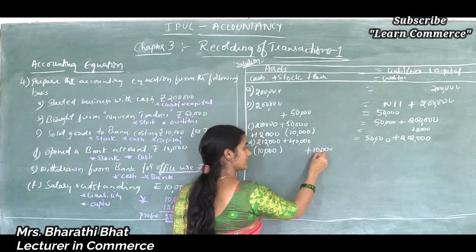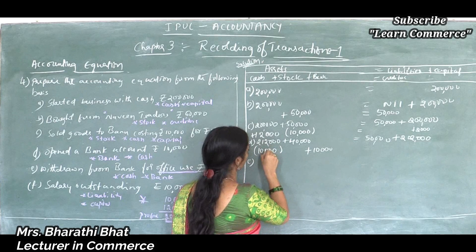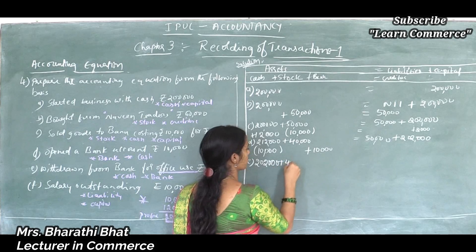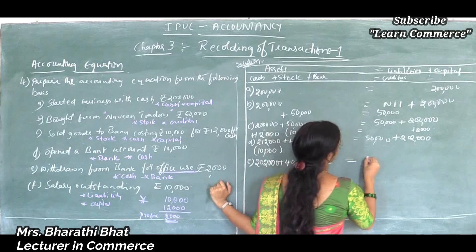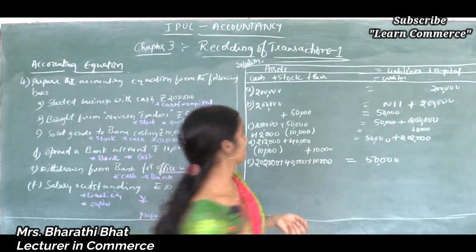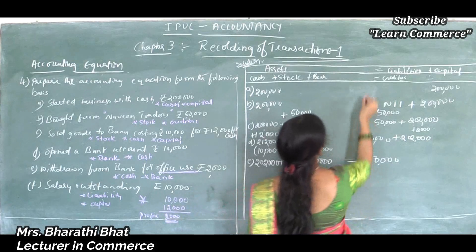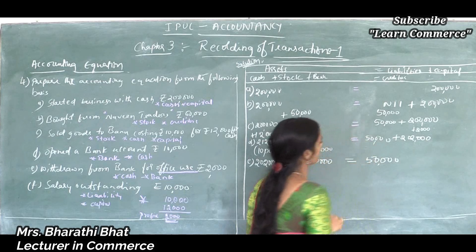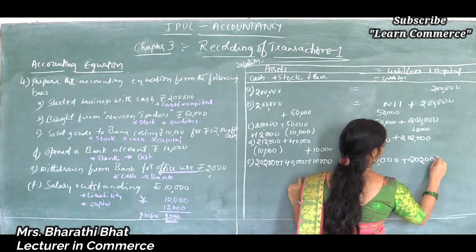10,000 asset decreases in cash while another asset — bank — increases by 10,000. So 2,02,000 cash plus 40,000 stock plus 10,000 bank equals 50,000 creditors plus 2,02,000 capital.